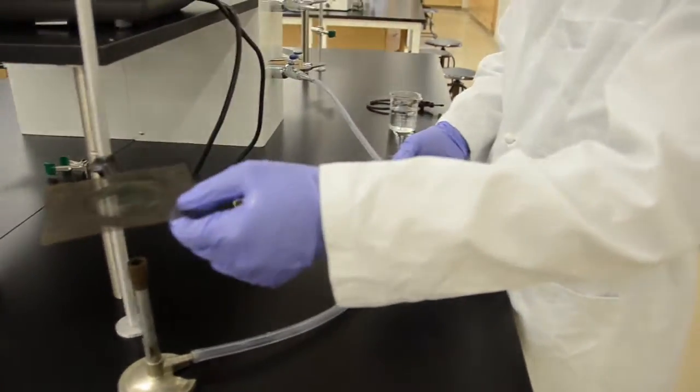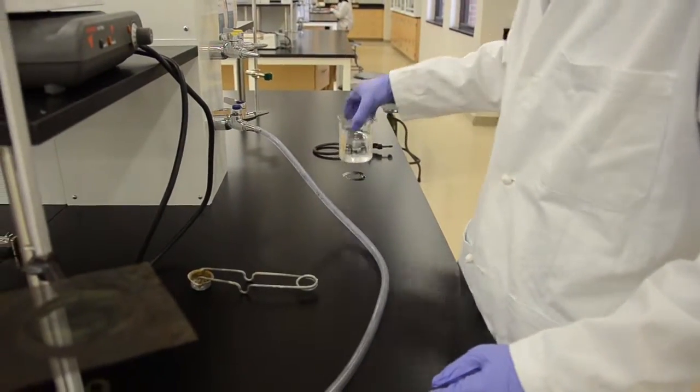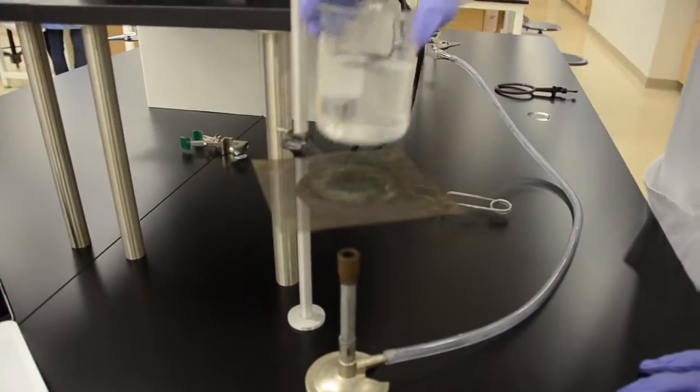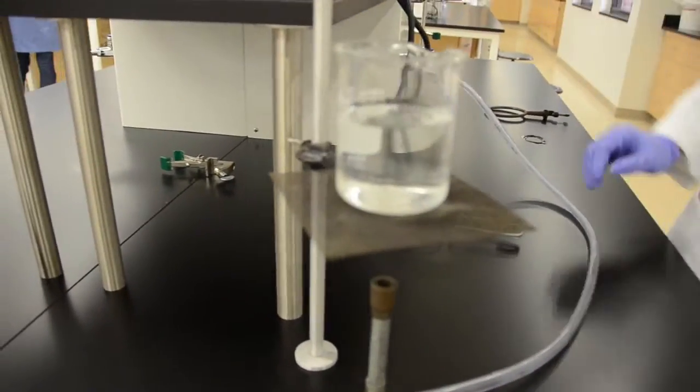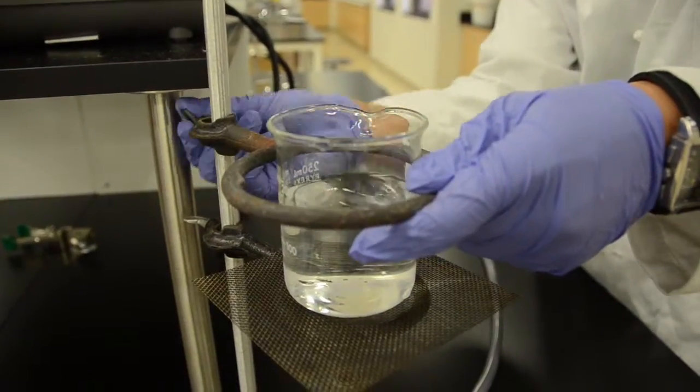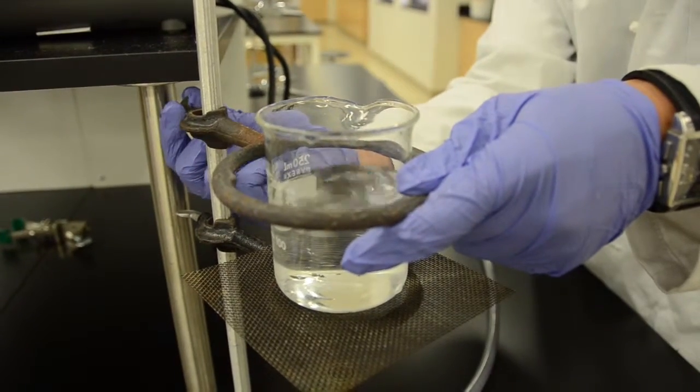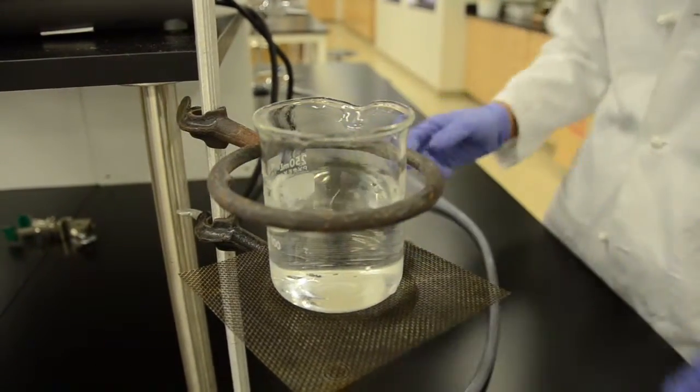Next, place the wire mesh screen atop the ring clamp and then the 250 milliliter beaker, filled with whatever liquid you wish to heat, in this case water, on the mesh screen. The last thing we do before igniting the Bunsen burner is place the second ring clamp around the beaker so that it prevents the beaker from falling off of the wire mesh screen.